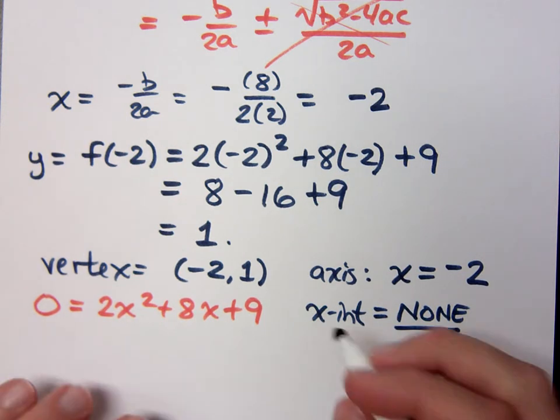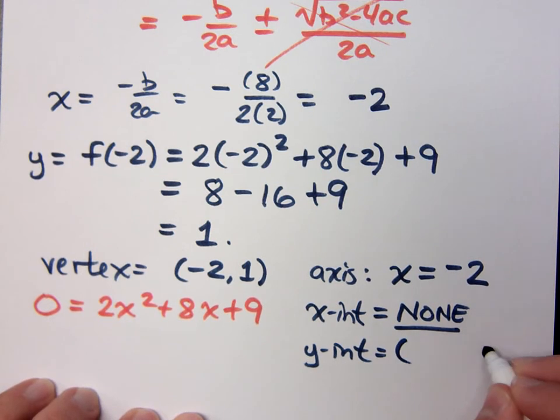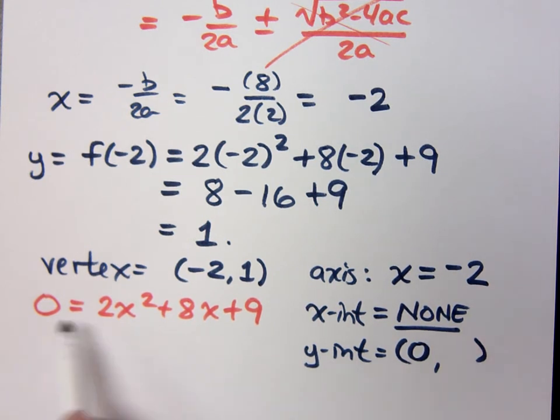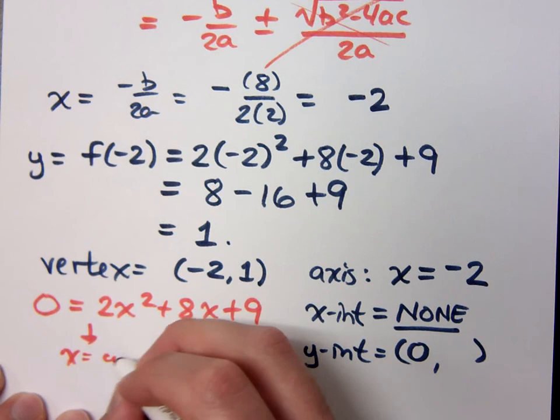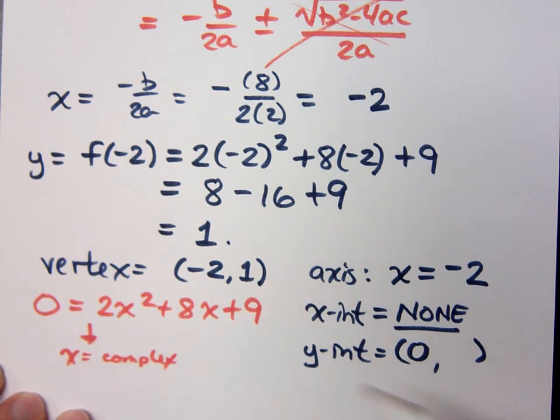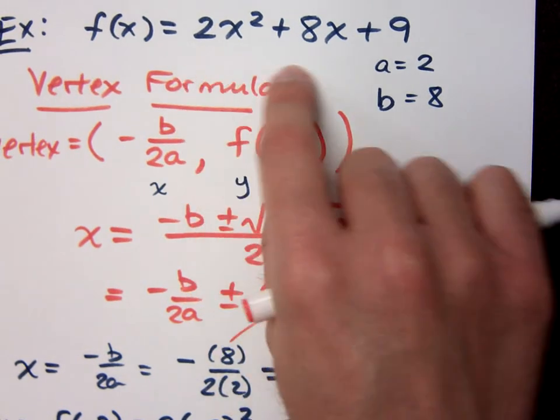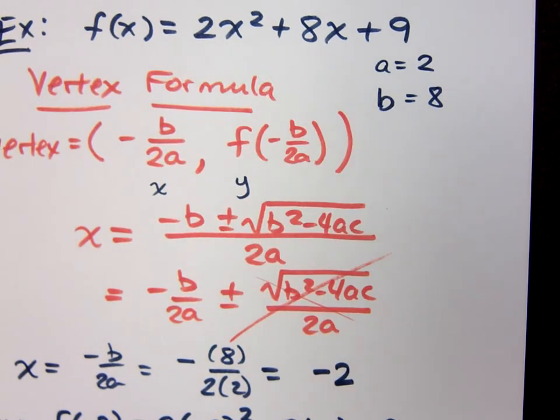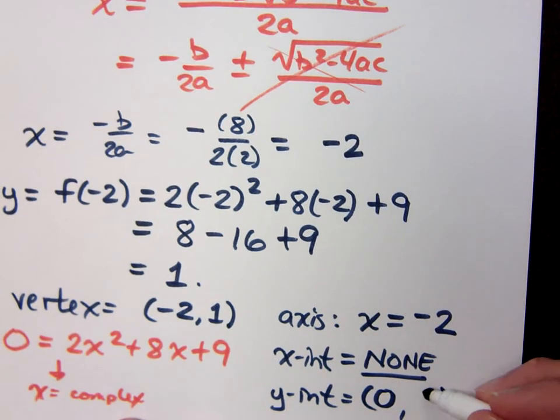What about your y-intercept? What do you know about your y-intercept? So f of 0. So I'll plug in 0. Now, this is, you know... This was when we were trying to solve for x. So here we know that x equals complex. But if you were to plug in 0 up here in your original function. Plug in 0. What do you get? 9, right? So my y-intercept is 9.